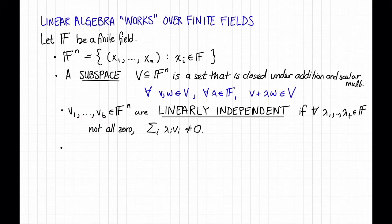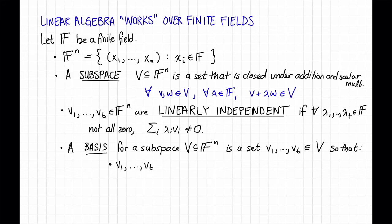We can define a basis for a subspace. So we say a basis for a subspace V subset of F to the n is a set of vectors v1 up to vt in V so that the following things hold. First, these vectors should be linearly independent as per the previous definition, and the span of these vectors should be equal to V.